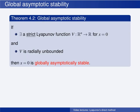Not necessarily. Theorem 4.2 gives sufficient conditions for global asymptotic stability, and we see that there is one more condition that needs to be satisfied in order to conclude global asymptotic stability: the Lyapunov function needs to be radially unbounded. Comparing Theorem 4.2 with Theorem 4.1, note that there are two extra conditions for concluding global asymptotic stability instead of local asymptotic stability.